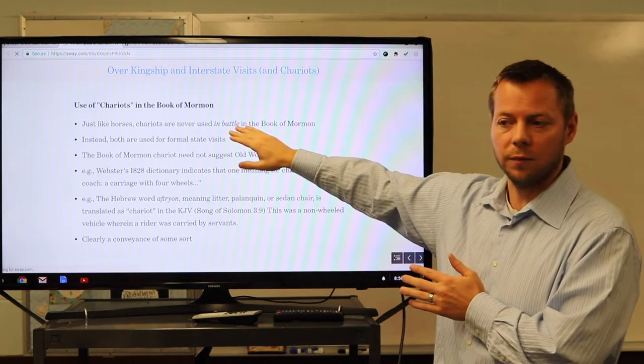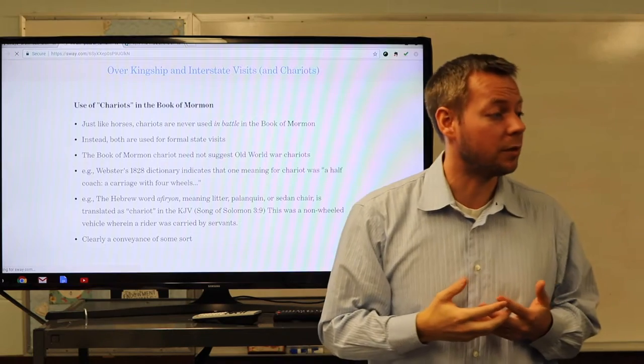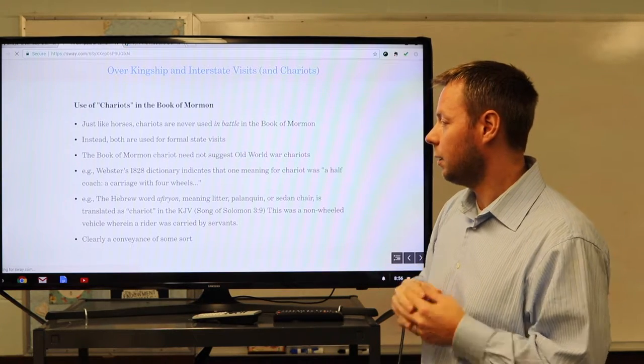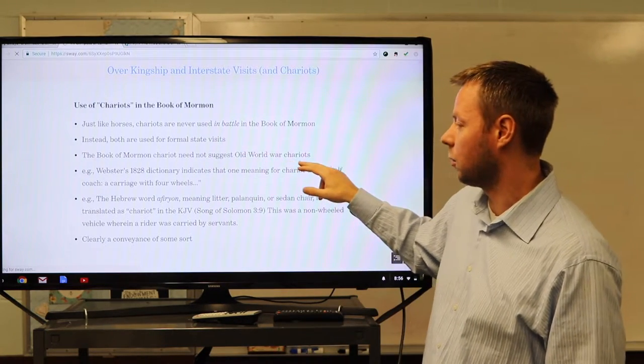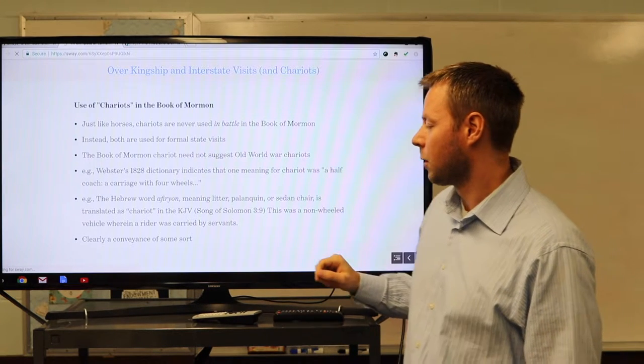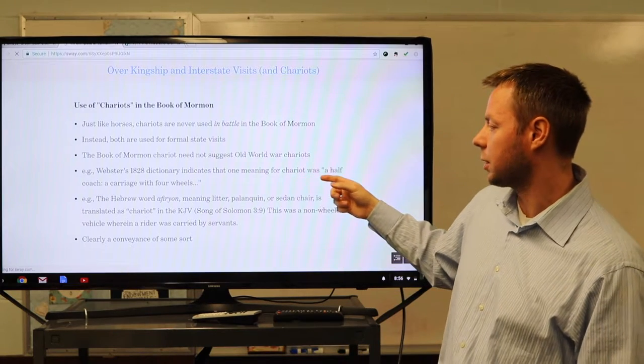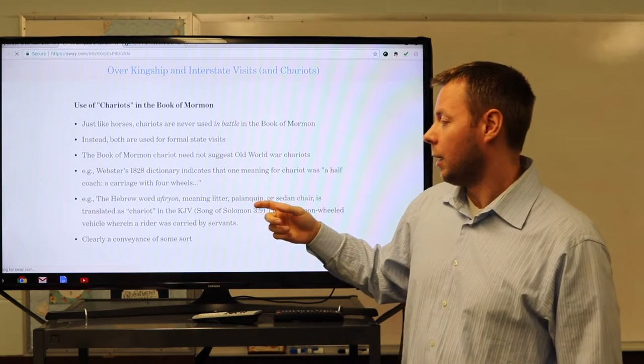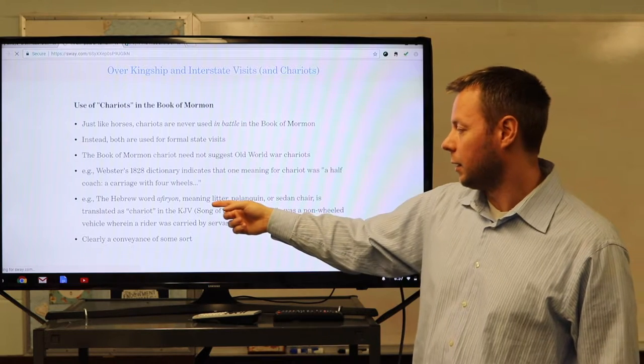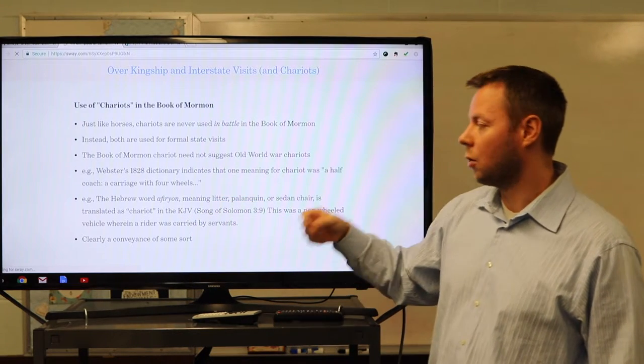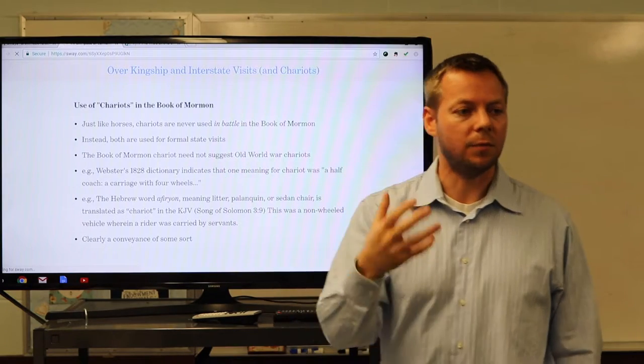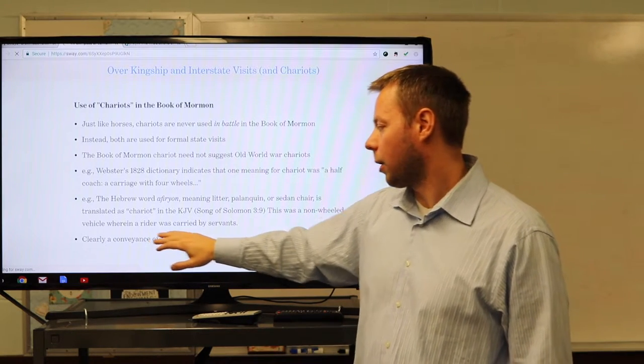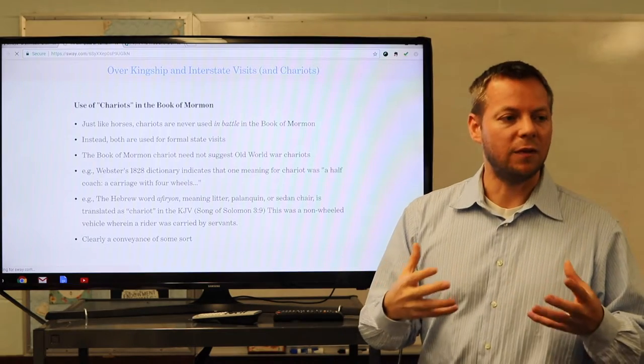So just like horses, chariots are never used in battle in the Book of Mormon. Horses never actually pull chariots, right? Both are used for formal state visits, like the one we're describing now. So the Book of Mormon chariot does not need to suggest an Old World War chariot. In fact, the Webster's 1828 Dictionary indicates that one meaning for chariot was a half coach, a carriage with four wheels, right? This is how it's actually used in the Doctrine and Covenants as well. The Hebrew word in the KJV, meaning litter, or sedan chair, is translated as chariot in the KJV. So we have examples where it doesn't mean Old World War chariots. This was a non-wheeled vehicle wherein a rider was carried by servants. So clearly, we are talking about a conveyance of some sort, right? We prepare the chariot.